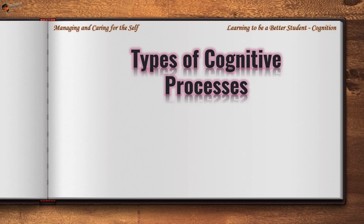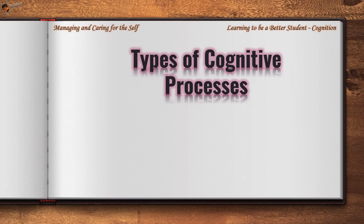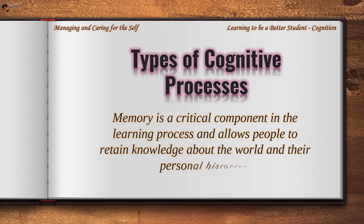Memory is an important cognitive process that allows people to encode, store, and retrieve information. Memory is a critical component in the learning process and allows people to retain knowledge about the world and their personal histories.